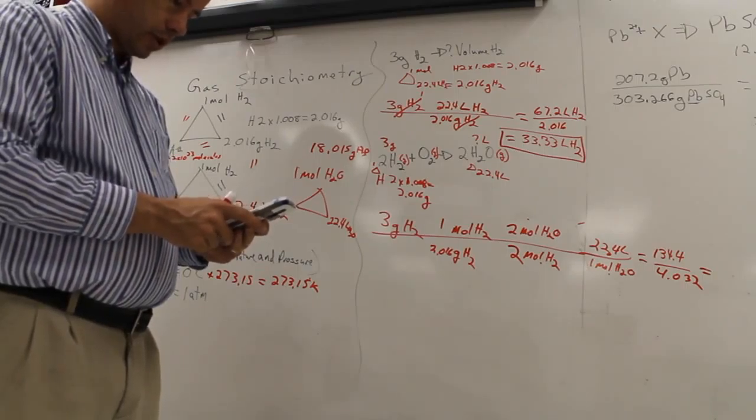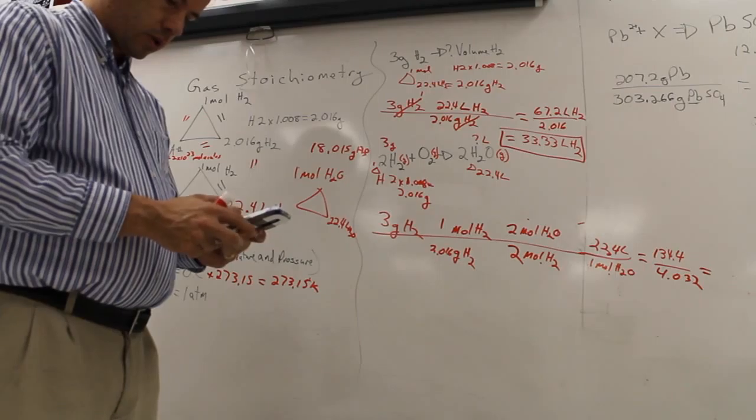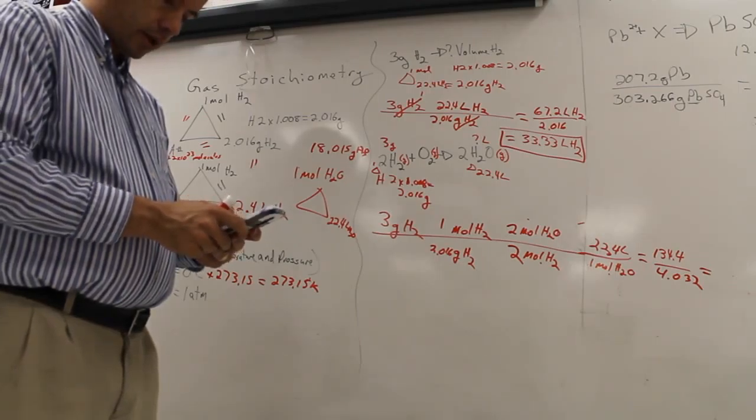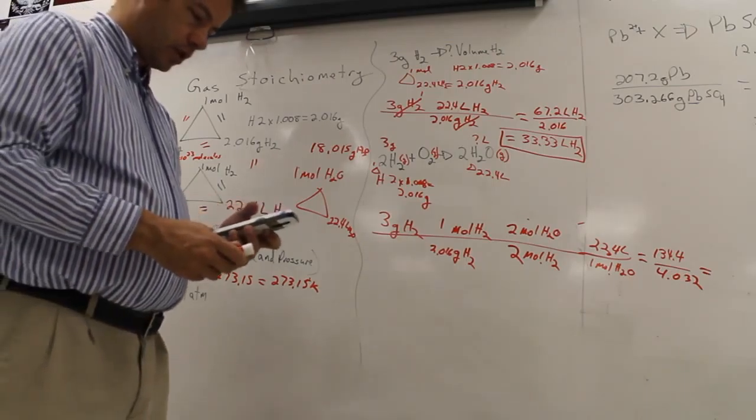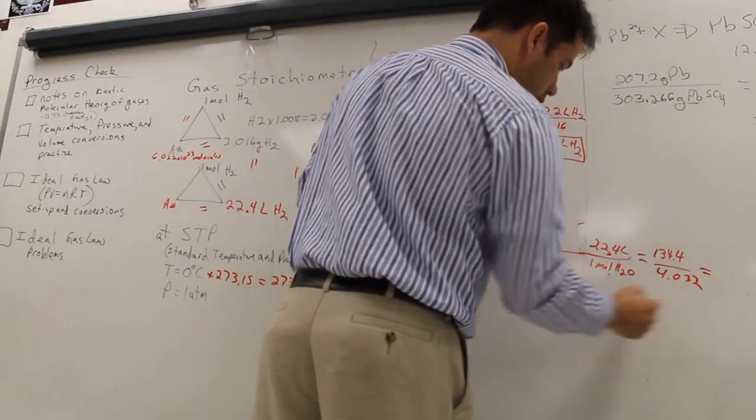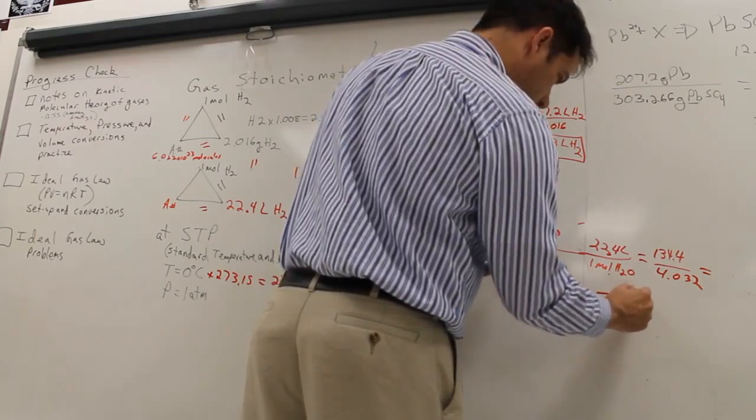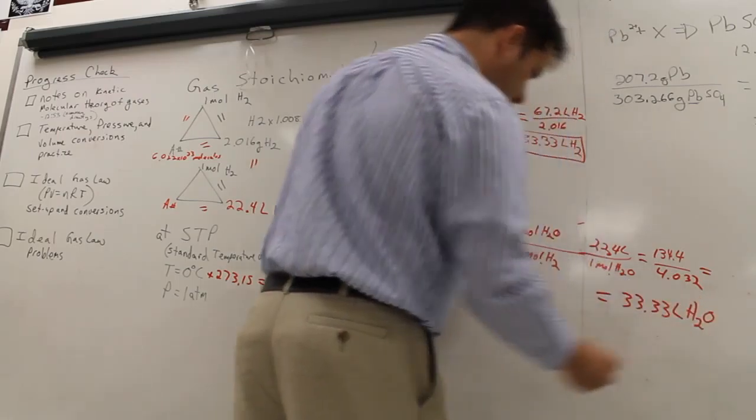Here, I'll go ahead and check myself. 6 times 22.4. Okay, did good. I did it correctly. Divided by 4.032. That was not intentional. 33.33 liters of H2O.